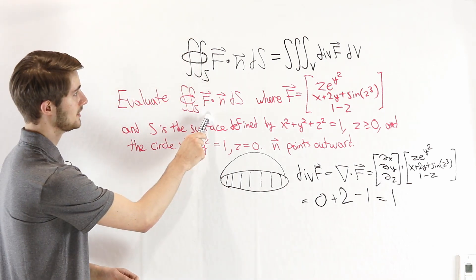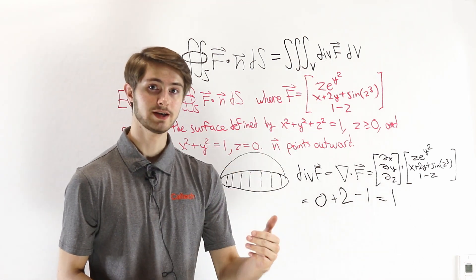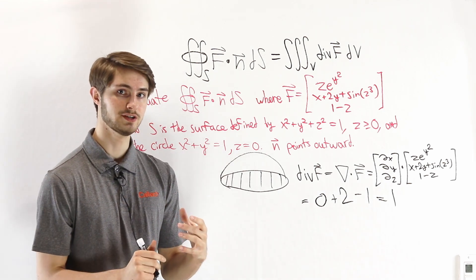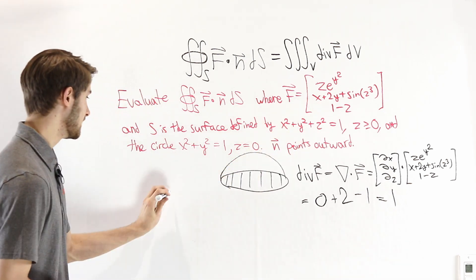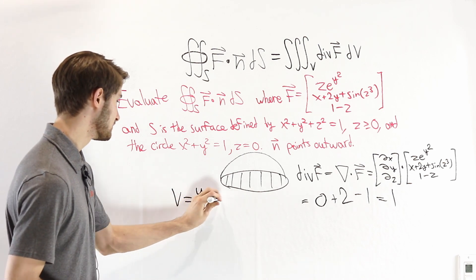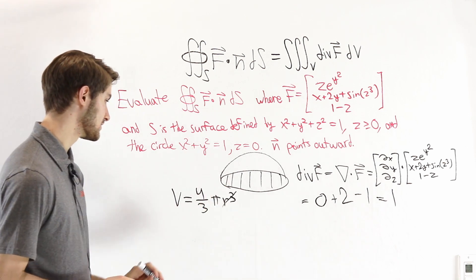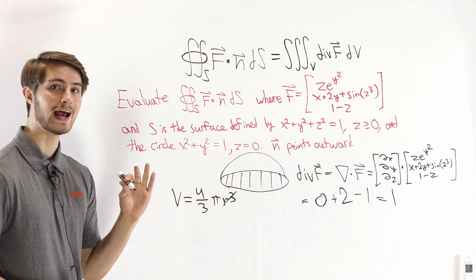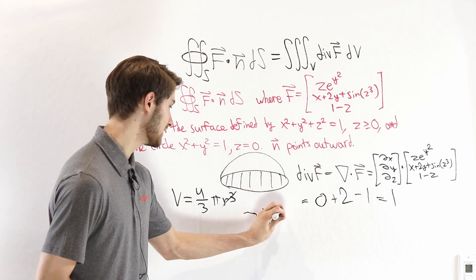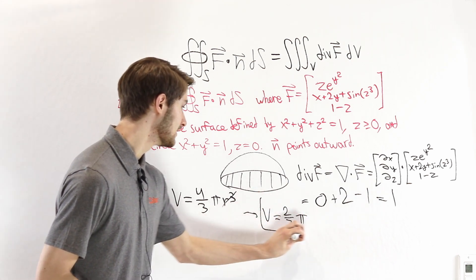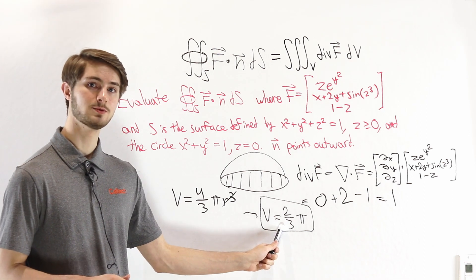So the surface integral equals the integral over the entire volume of 1 dV, which is just the volume of the region. The volume of a full sphere of radius 1 is (4/3)π r³ = (4/3)π. Since we have a hemisphere — half the sphere — the answer is (1/2) · (4/3)π = (2/3)π. Without evaluating any integrals directly, by the divergence theorem we find the surface integral equals 2π/3.